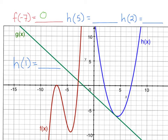Let's look at h of 5. When I go to 5, where is the blue line? Because h is the blue line. It is down 1, 2, 3, 4, 5, 6. h of 5 is negative 6.